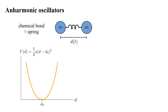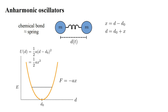The potential energy of an ideal spring is a quadratic function of d: one-half A times the quantity d minus d-zero, squared. d-zero is the equilibrium bond length, and the constant A represents the stiffness of the spring. It's convenient to define the deviation from equilibrium as a variable x equals d minus d-zero. Then d equals d-zero plus x, and the potential energy is one-half A x squared.